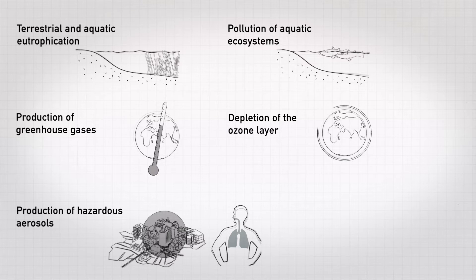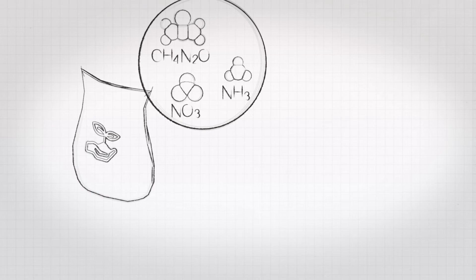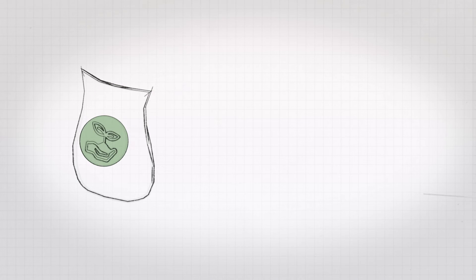Let's see how human excreta contributes to the harmful release of reactive nitrogen into the environment. Reactive nitrogen compounds such as urea, ammonia, or nitrate are major components of fertilizers. They are applied to the soil to increase agricultural production.